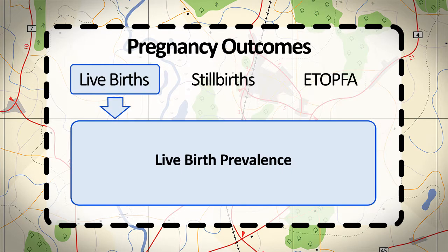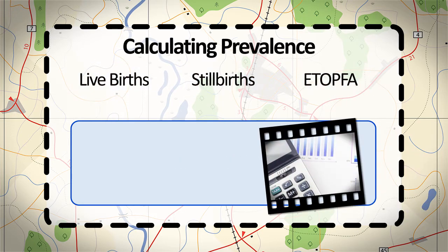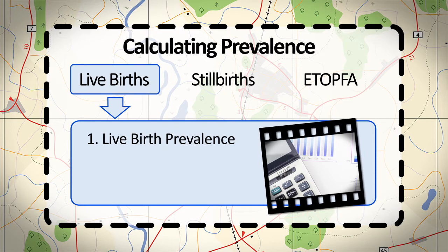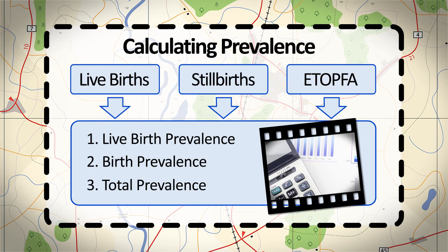Some programs include live births only to calculate a live birth prevalence. Others include live births and stillbirths combined to calculate a birth prevalence. Finally, some programs include data collected from live births, stillbirths, and elective terminations of pregnancy for fetal anomaly to calculate a total prevalence. The three measures for calculating prevalence of birth defects are: 1. Live birth prevalence, 2. Birth prevalence, or 3. Total prevalence. Each of these prevalence measures is based on which pregnancy outcomes are included in the calculation.